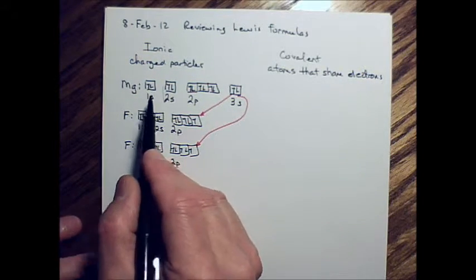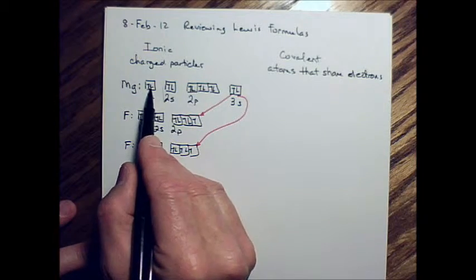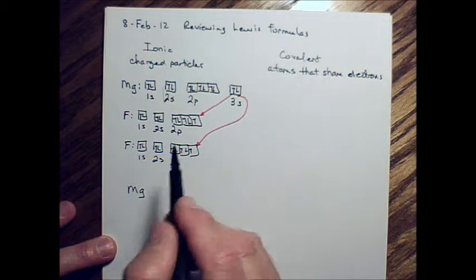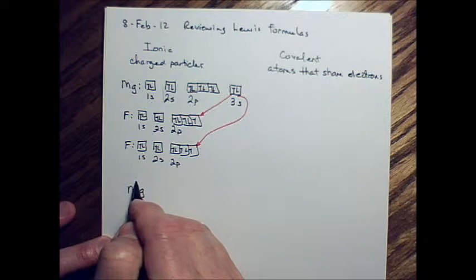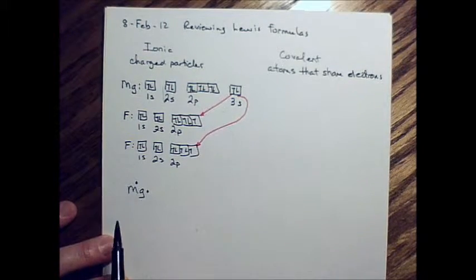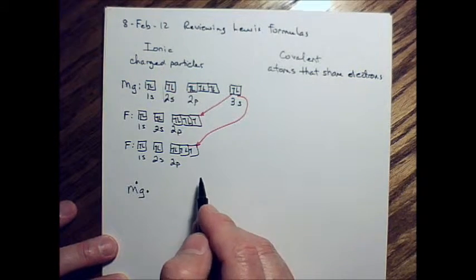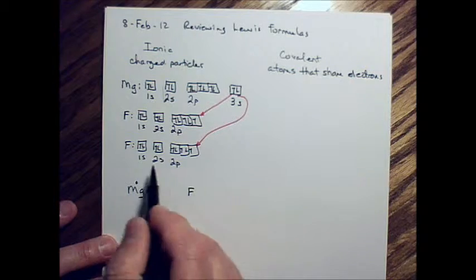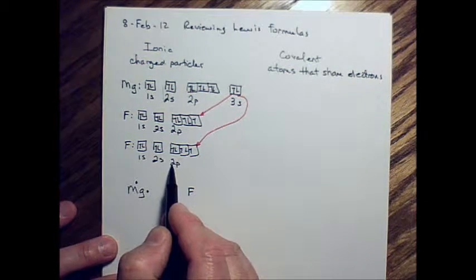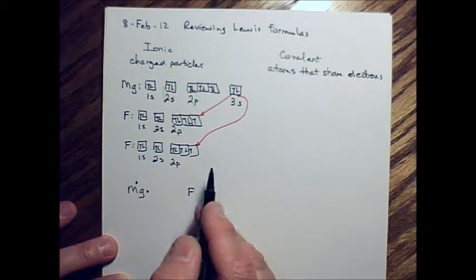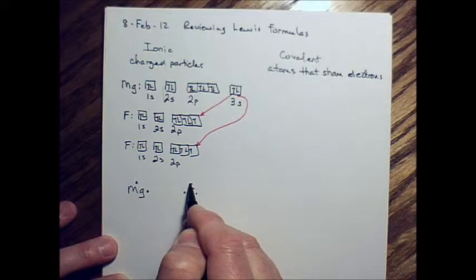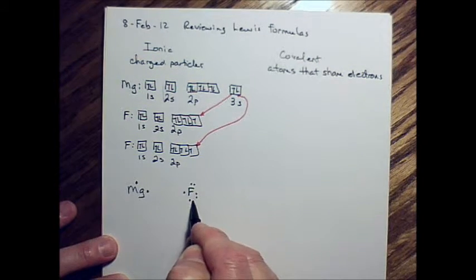All right, so when we started out with magnesium, we had, in the valence level, 3s, we only had two electrons. So the Lewis dot, or I'm sorry, the electron dot formula for magnesium just has two dots for those two valence electrons. And the fluorine had, in the valence level, this valence level is the second primary level. And we had 1, 2, 3, 4, 5, 6, 7 electrons. Put one of those on each of the four sides and go back and pair them up as needed until we get to 7.